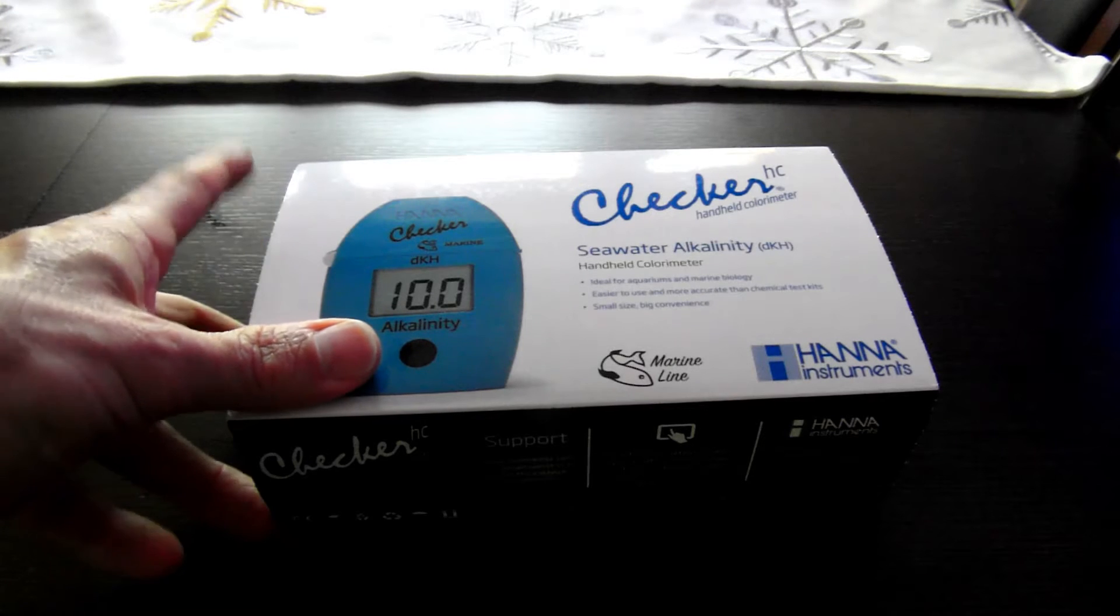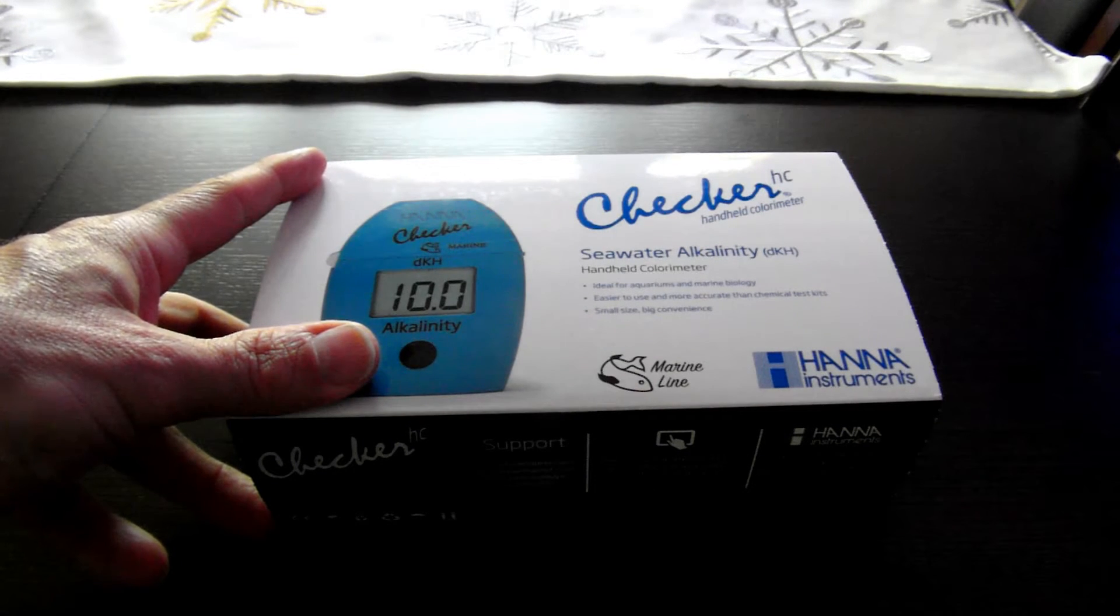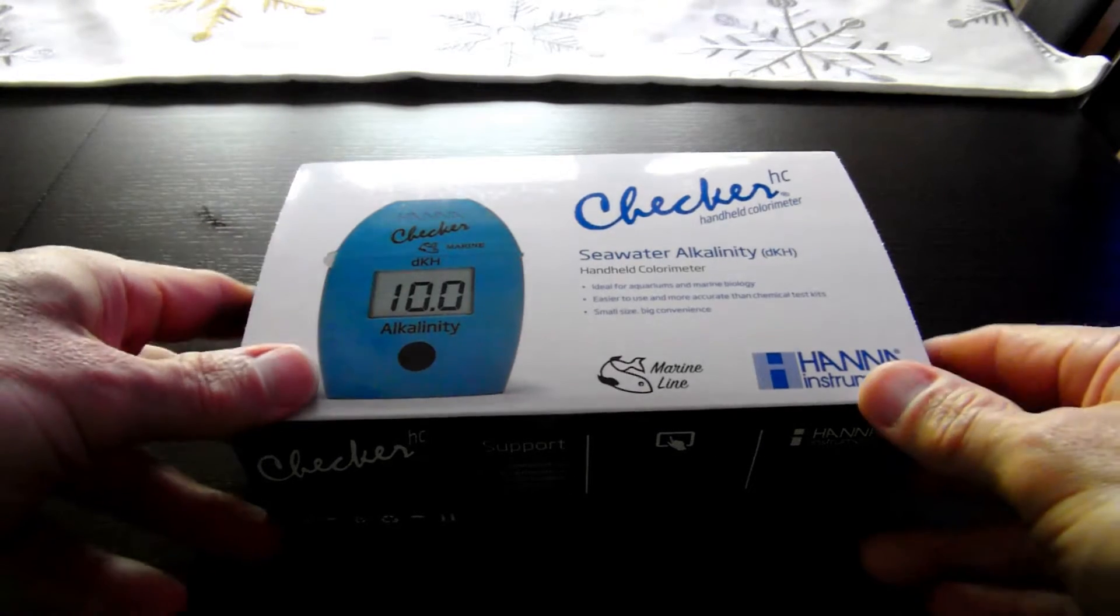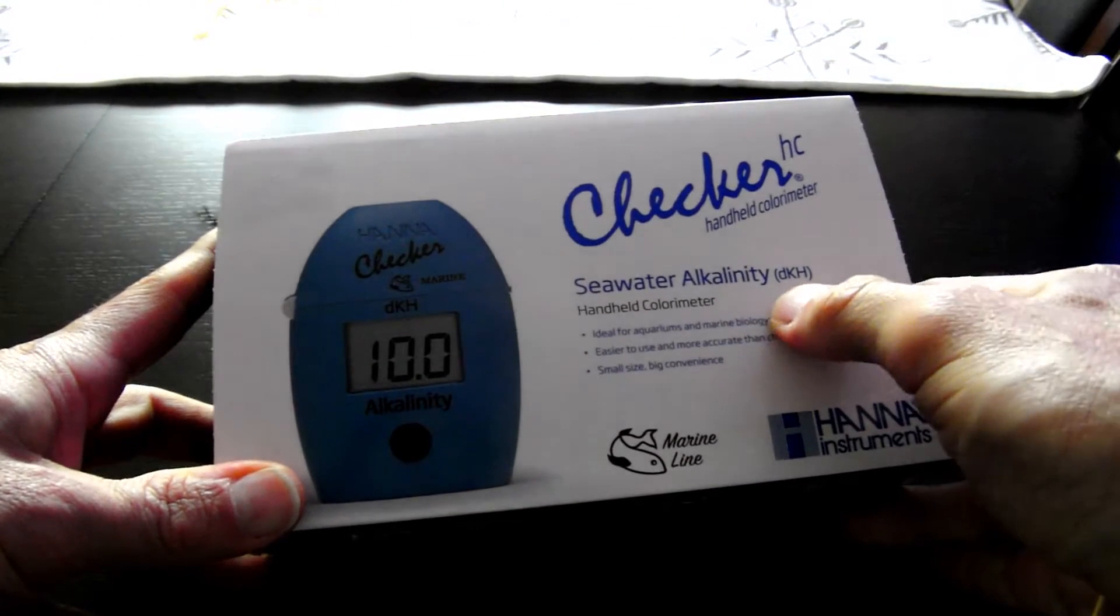I ordered from Bulk Reef Supply. I'm really happy with them as a supplier and find their helpful videos to be very informative and educational. This version of the Hanna Checker for alkalinity measures in DKH, German Degrees of Hardness.